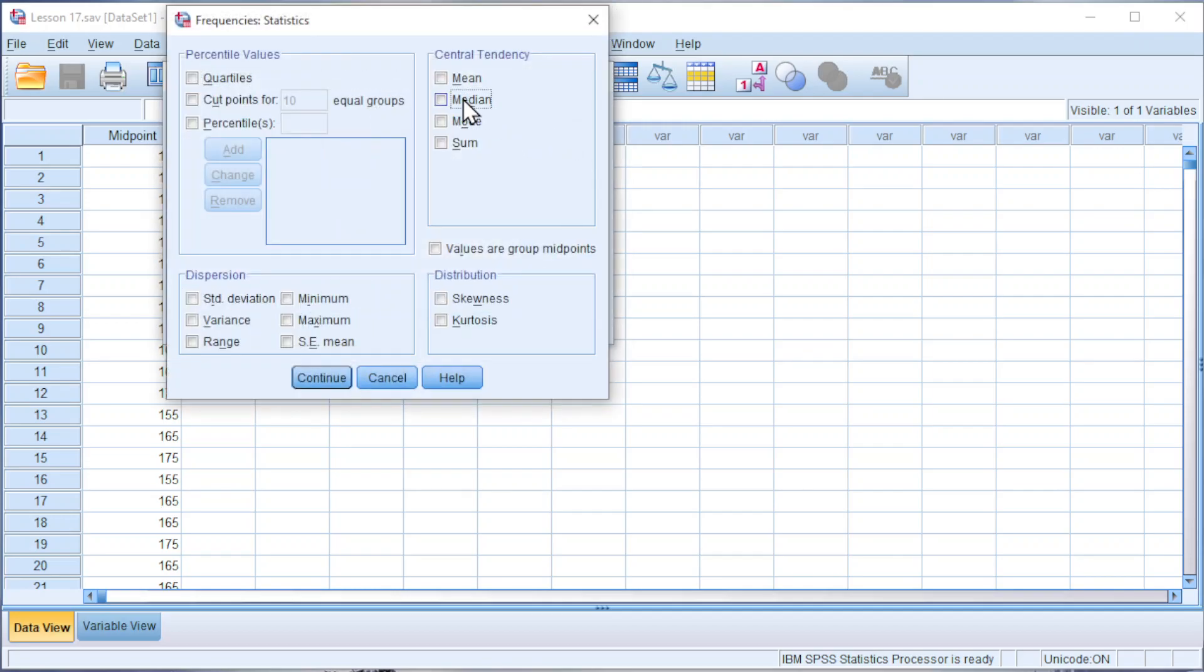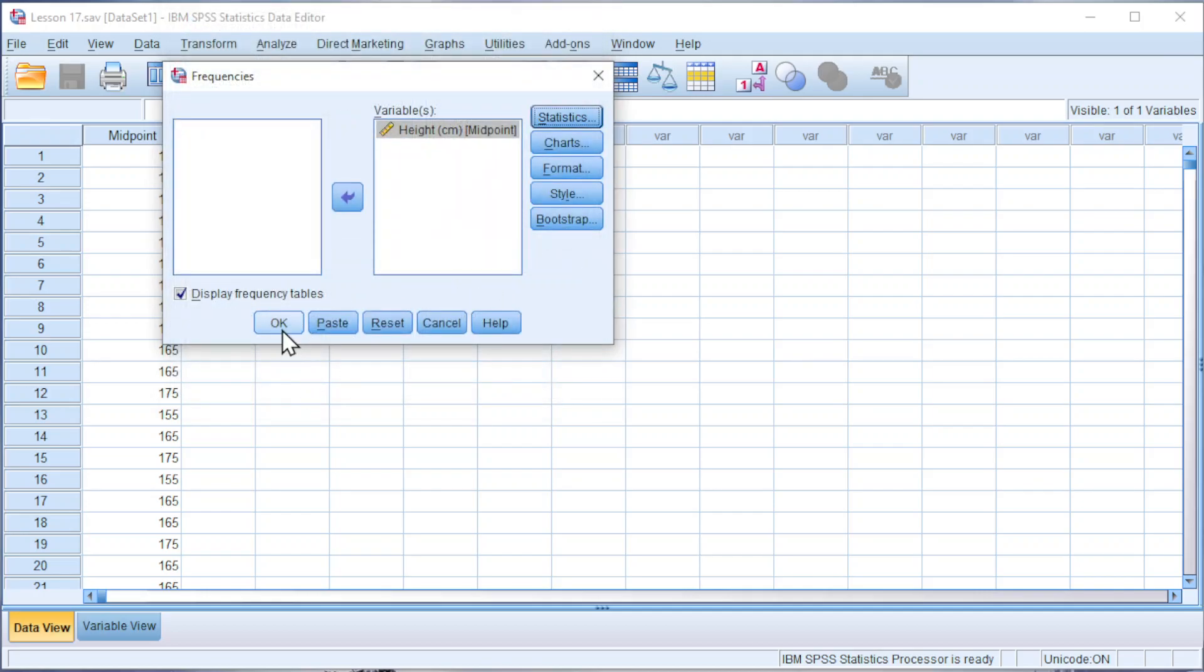Check Median. Check values are group midpoints. Click on Continue. Click on OK.